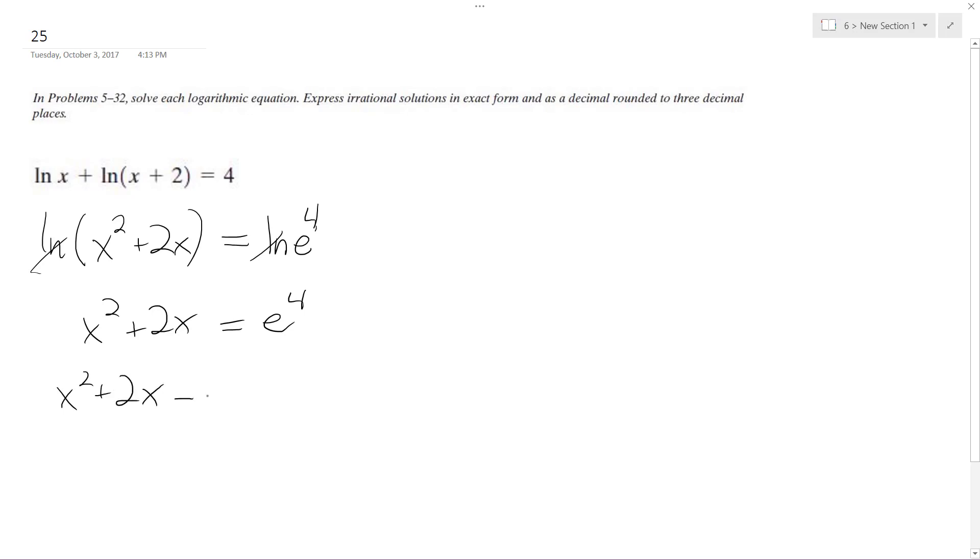Now if we plug this into the quadratic formula, x equals negative b plus or minus square root of b squared minus 4ac all over 2a, we end up with...